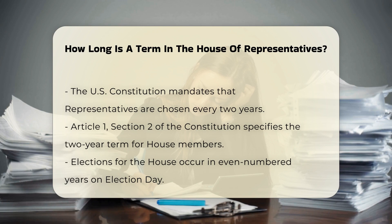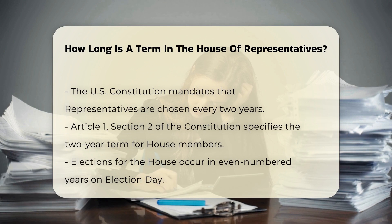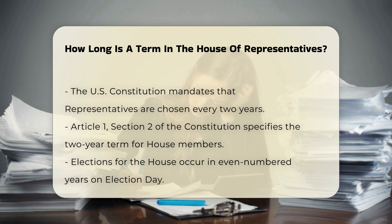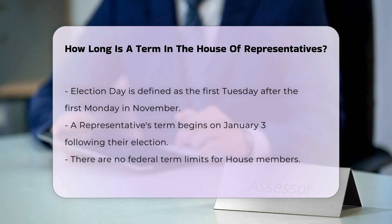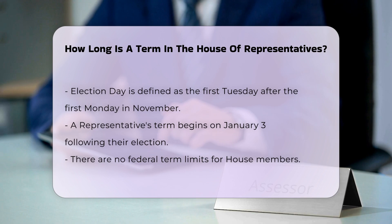This direct election process is mandated by the U.S. Constitution, which states that representatives must be chosen every second year by the people of the several states. According to Article 1, Section 2 of the U.S. Constitution, representatives are chosen every second year.